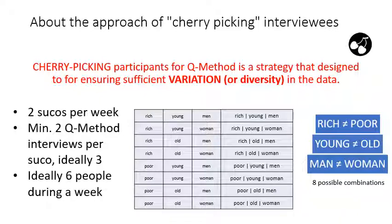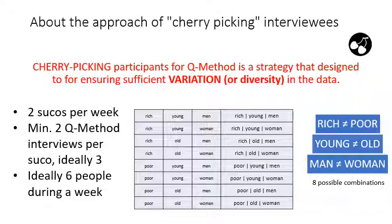You need to consider a few things. You're going to cover two SUKUs per week. The guidance for the Q method requires you to select a minimum of two interviewees per SUKU, ideally three people. So ideally you'll end up with six people every week being interviewed using the Q method. A few very basic criteria can tell you what to select: if people are rich or poor, young or old, men or women. Already with these combinations you'll have eight possible combinations of rich and poor, young and old, men and women.